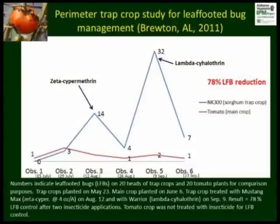This is a graphical representation of how sorghum trap crops work for leaf-footed bug control under high pest pressure. The trap crop served as a source of food and mating site. Two insecticide treatments on sorghum were sufficient to reduce 78% of leaf-footed bugs without treating the main crop.